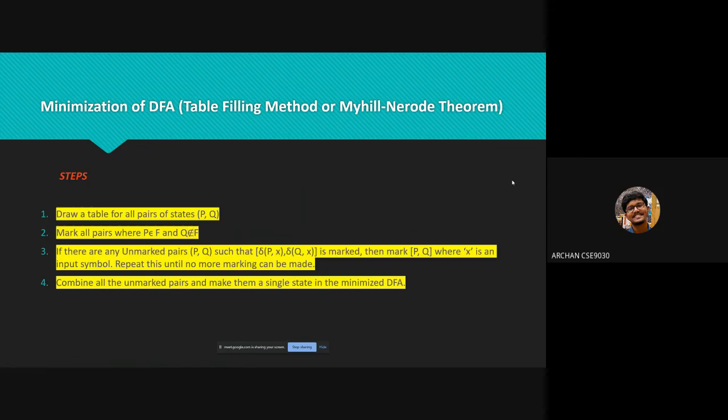First, we have to draw a table for all pairs of states PQ, not necessarily connected directly. All are unmarked initially. Second step: we have to consider every state pair PQ in the DFA where P belongs to F and Q doesn't belong to F, or vice versa, and mark them. Here F is the set of final states.